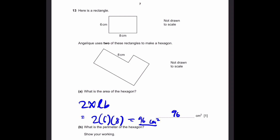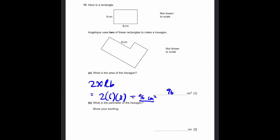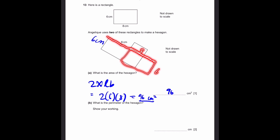B. What is the perimeter of the hexagon? Well, first we know that the length is 8 centimeters here, so we know that this length has to be 6 centimeters. And visually we can see that if the second rectangle was placed with sides 8 and 6, this line would be straight.